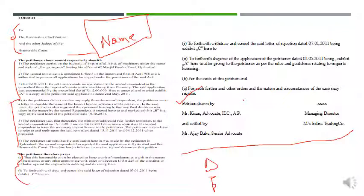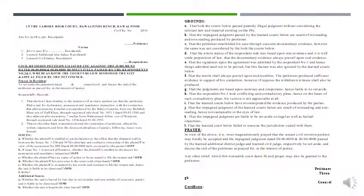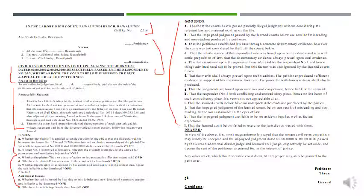The format also includes details of the advocate and the date, time, and place. For the format of revision, the same structure applies: the name of the court, civil revision number, details of the parties, subject matter, the issues involved, the grounds, and what relief is being sought in the revision. Finally, the details of the party filing the revision are provided. This format was already shared during class.